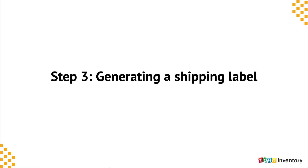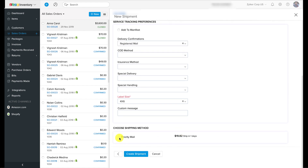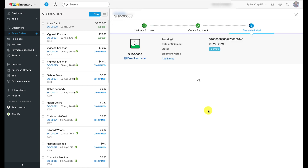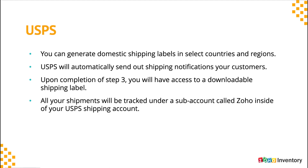Choose the option that suits your needs and hit the 'create shipment' button. Now we are moving on to step 3: generate the label. Here you will find the shipping label being generated based on your preferences in the previous two steps. USPS will automatically keep track of the shipments you make through them and update their statuses in Zoho Inventory.